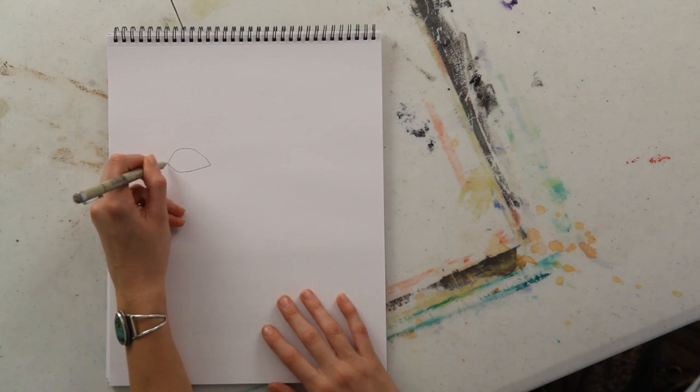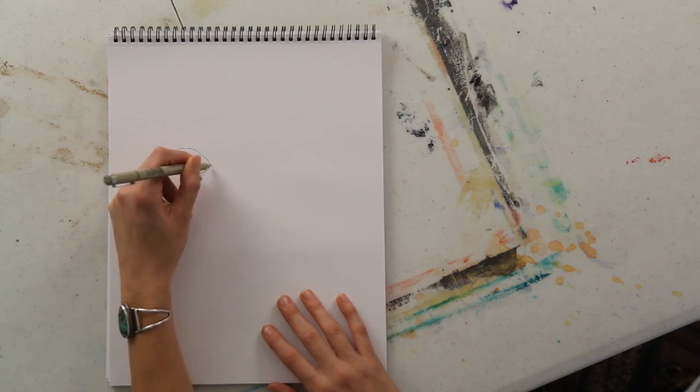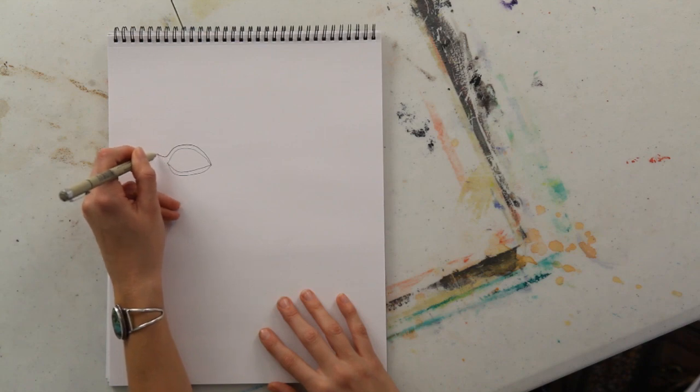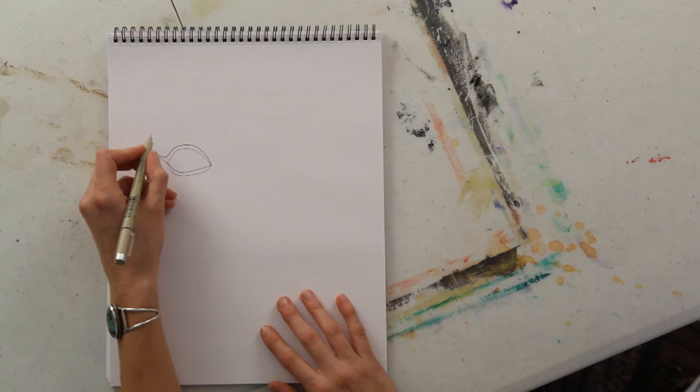So as usual, I'm going to have you start out with an eye. And you're going to add a little pointy cat eye makeup coming up from the side of the eye.